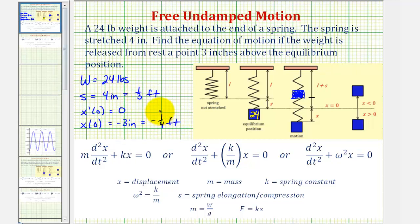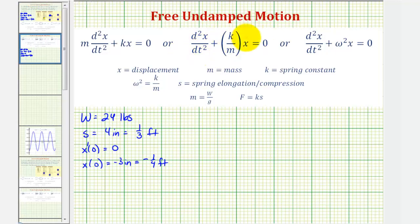Now that we have all the given information, we want to find the mass and the spring constant so we can write the differential equation. Let's go ahead and set this up — we'll find k, the spring constant, and the mass m.